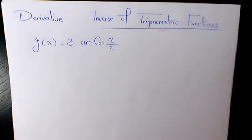What's up guys, this is Masi. Welcome to another video. In this video I want to show you how to find the derivative of g of x, which in this case g of x is 3 times arc cosine of x over 2.